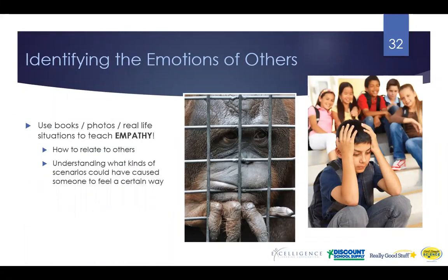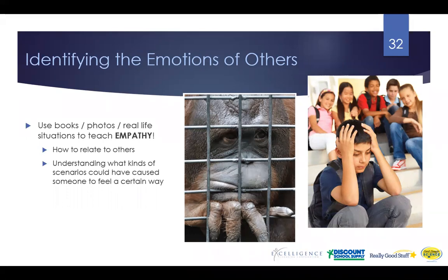Now that we've talked about children and their own emotions, it's also important that they're able to identify emotions in others. You can use different storybooks, photos, or real-life situations. What you want to teach them most is empathy — for example, look at a picture of a child who looks sad while others are laughing, and ask, 'What do you think happened to him? How do you think he feels?' Empathy is a really important skill for young children.